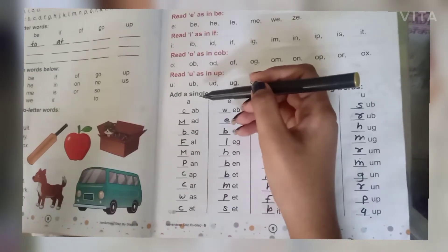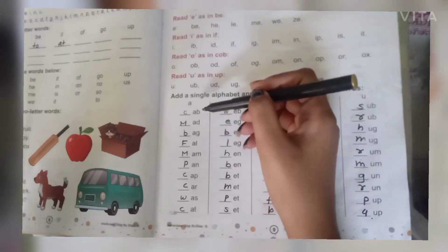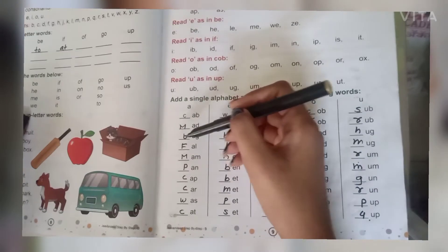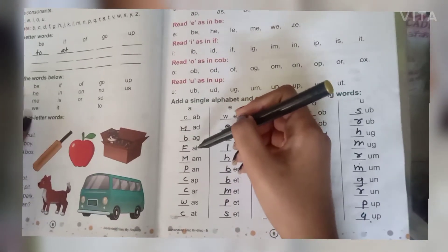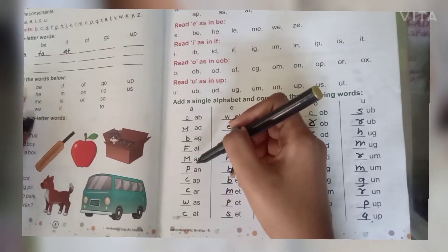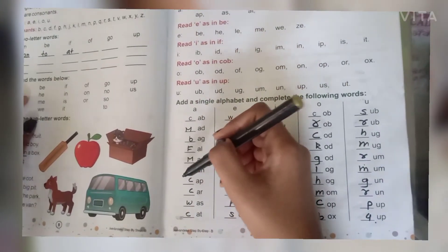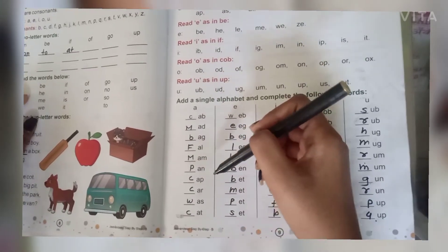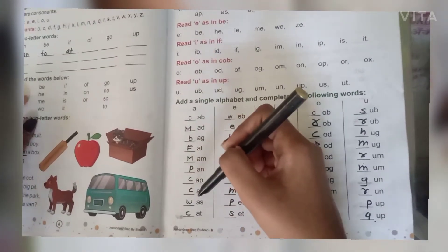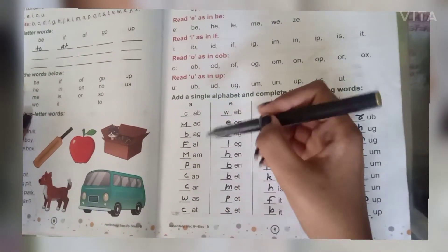C-A-B, cab. M-A-D, bad. B-A-G, bag. F-A-L, fall. M-A-M, ma'am. P-A-N, pan. C-A-P, cap. C-A-R, car. W-A-S, was. C-A-T, cat.